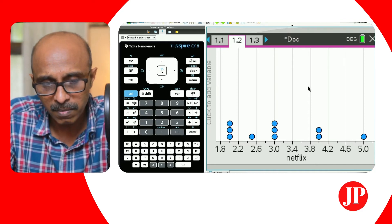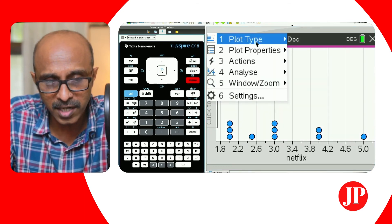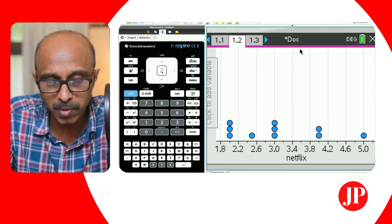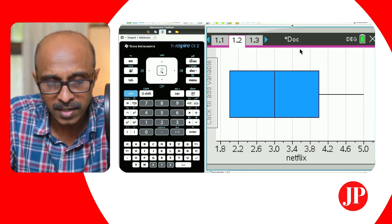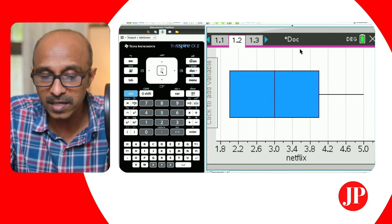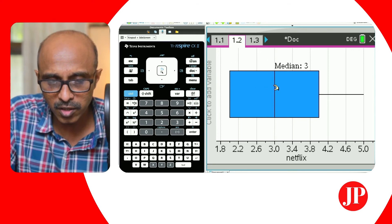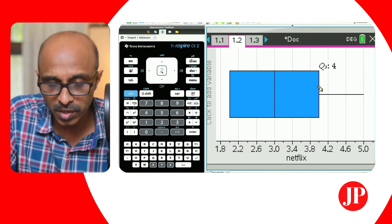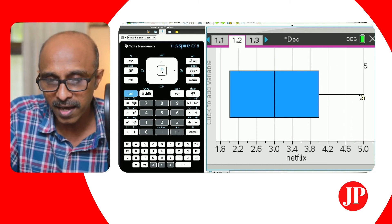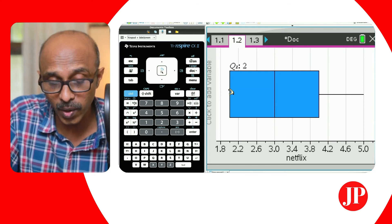We want to see a box and whisker plot, right? So we'll go to menu and then we'll say plot type and we'll say we want that box plot. And just like that, we get the box plot for the Netflix. Now we want to do a comparison, right? This is your Q1. This is your Q2 or the median. This is the Q3, the upper quartile, and that's the maximum value. The minimum value is also the Q1 here. All right.